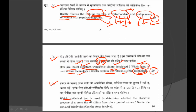Sub-question C: which statistical test is used to determine whether the observed progeny of a cross differs from the expected values? You have to name that statistical test and briefly describe the steps involved. For that you will get 10 marks.